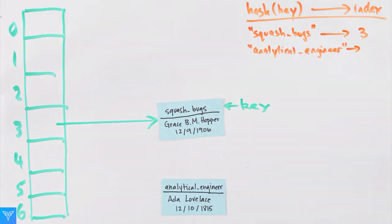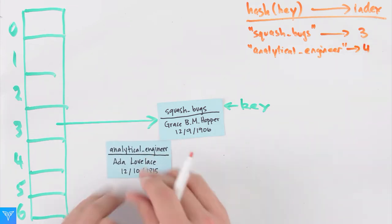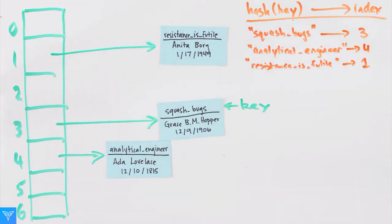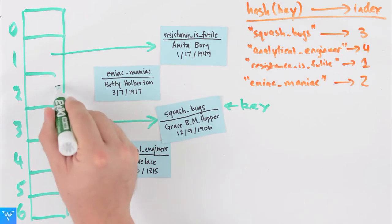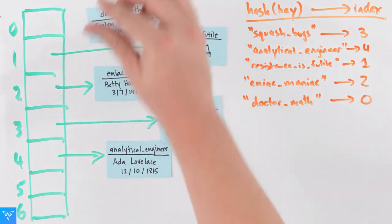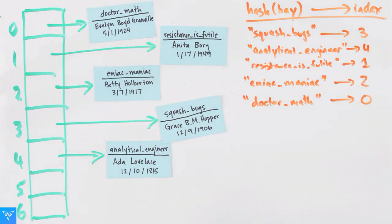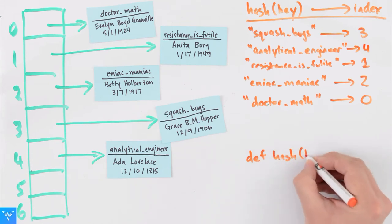Let's add some other users. The hash function applied to analytical engineer returns four. So this user would be placed at index four. Resistance is futile gets placed in index one. Aniac maniac gets placed in index two. Dr. Math gets placed in index zero. Notice I haven't told you what the hash function is. There are many different hash functions to choose from. And if you choose a different hash function, you'll get a different assignment.